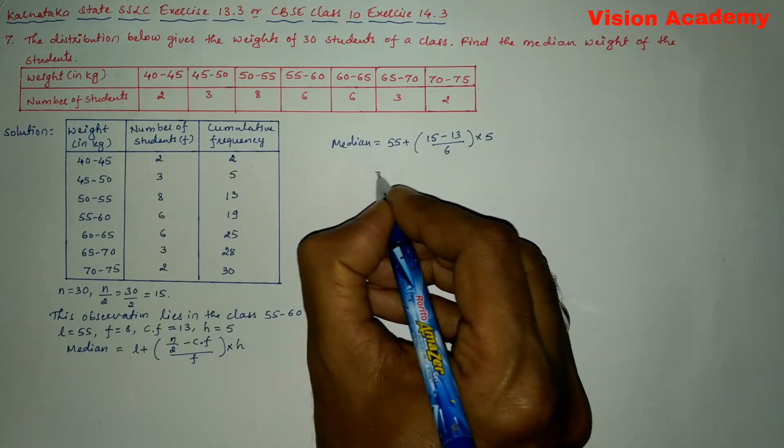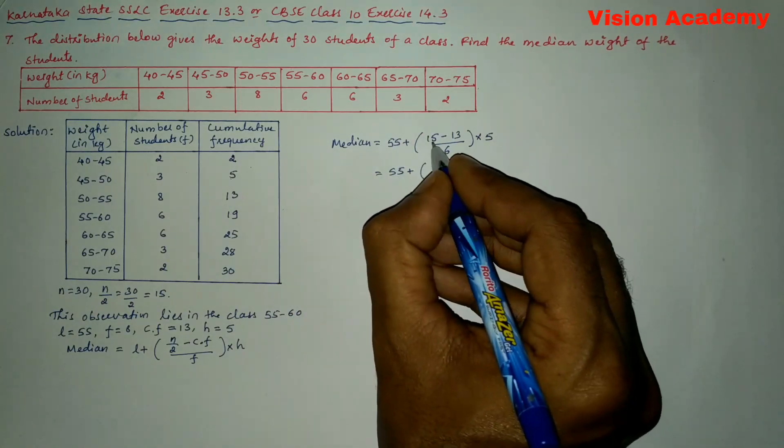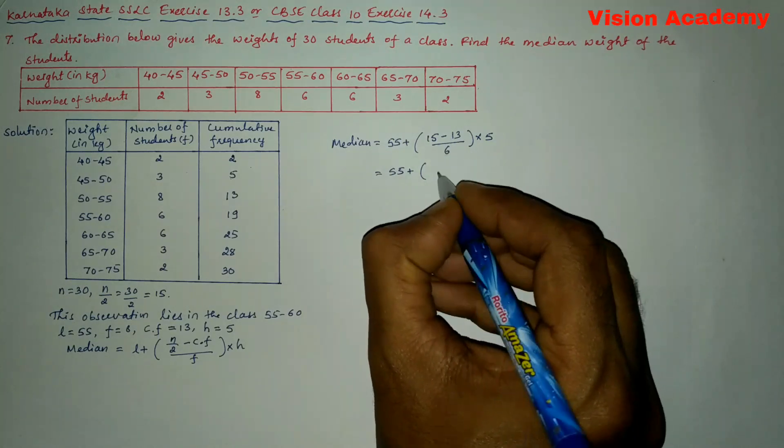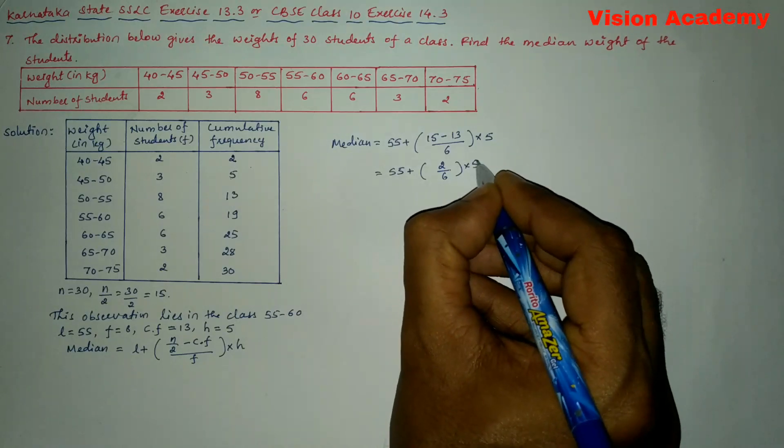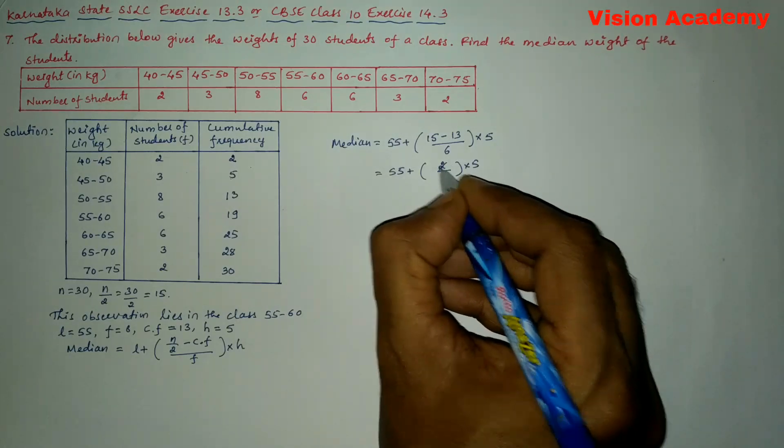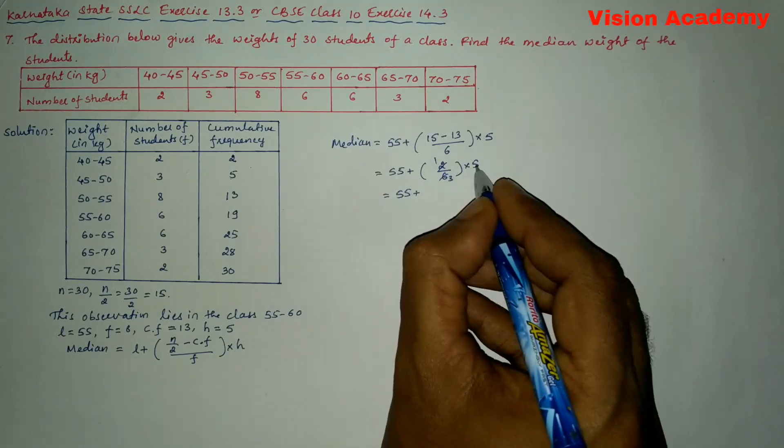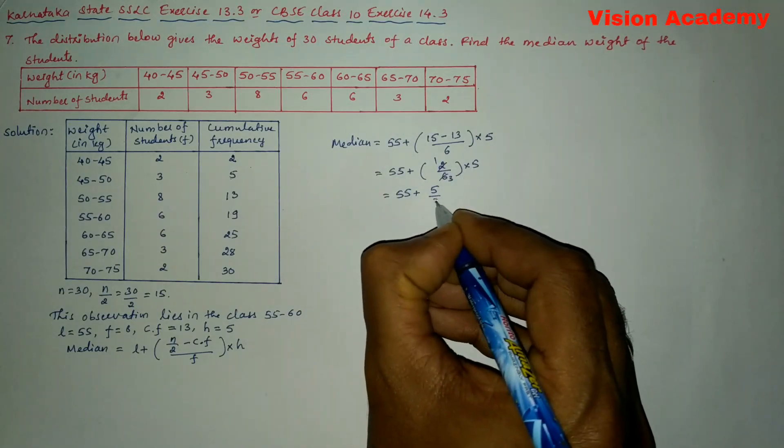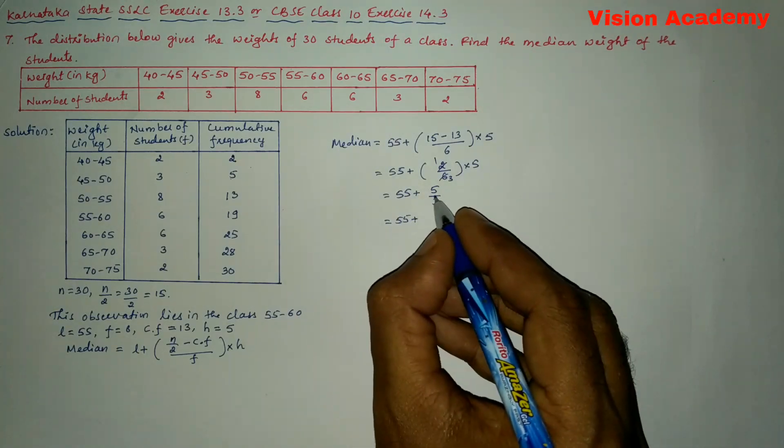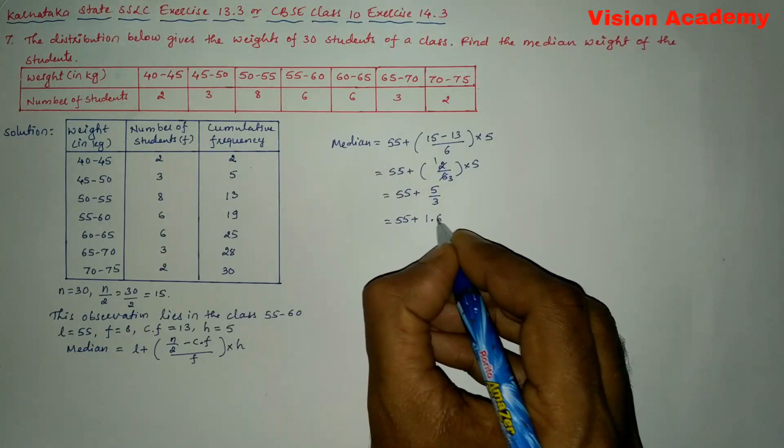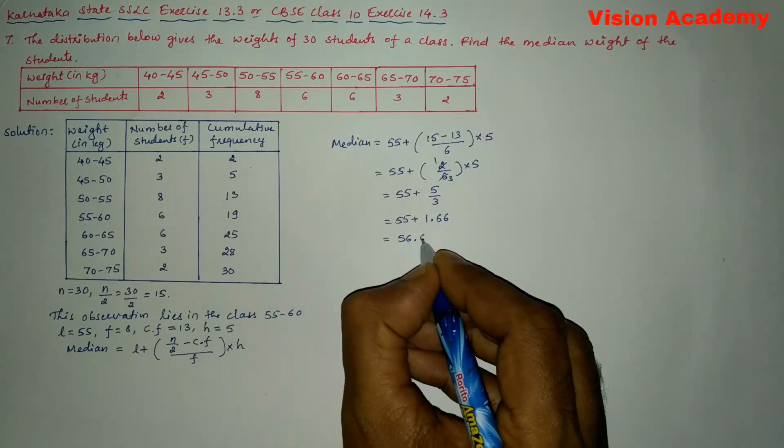Now let us further simplify. So this gives us 55 plus 15 minus 13, which gives us 2 divided by 6 into 5. So this one will get cancelled by 2. So here we can write 55 plus 5 divided by 3. This gives us 55 plus 5 divided by 3 gives us 1.66. So this gives us 56.66.